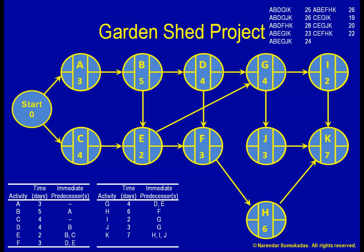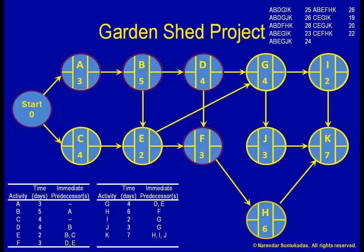Comparing all these totals, we take the longest path, A, B, D, F, H, K, to be the critical path. The project duration will be the length of the critical path, or 28 days.